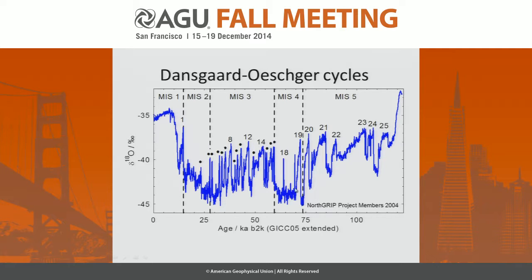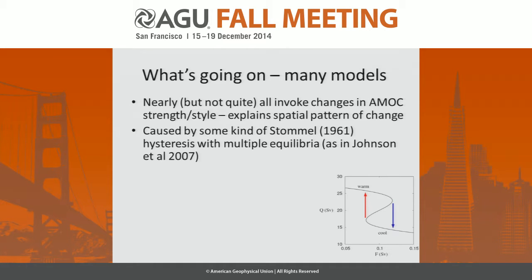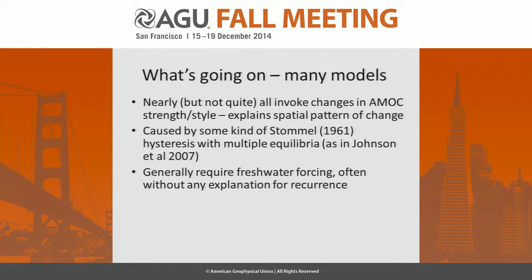There are only very small and brief events during Marine Isotope Stages 4 and 2. There are lots of models — nearly but not quite all of them invoke changes in AMOC in some way, which at least explains the spatial pattern of change. If it's an AMOC change, it is often caused by some kind of Stommel-type hysteresis with multiple equilibria, generally requiring freshwater forcing.